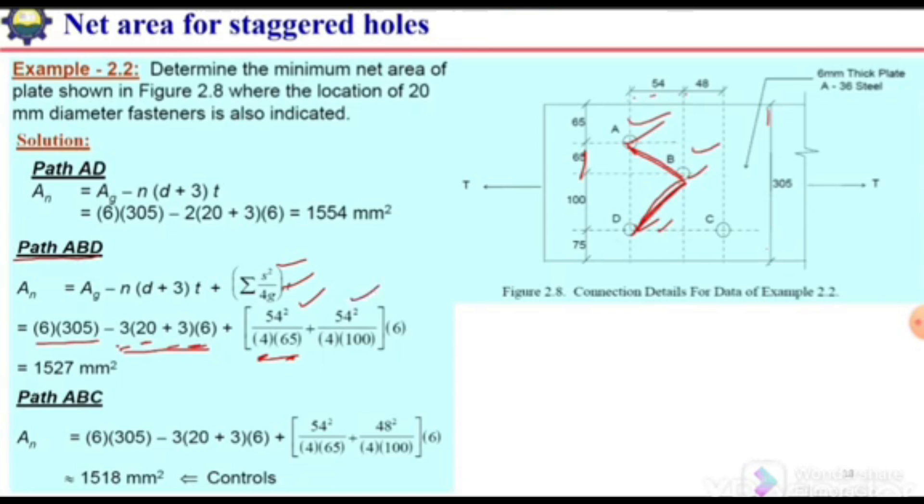For B and D, again the stagger is 54, so 54² divided by 4 times the gauge length. In case of B and D, the gauge is 100, so 4 times 100. We multiply this with the thickness to account for these two staggers. Here we get the area 1527 mm².